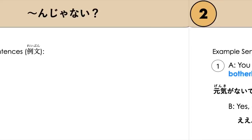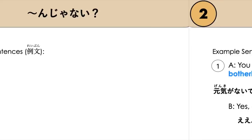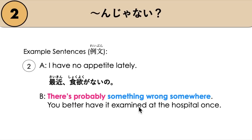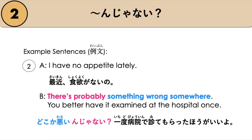Next example: A says, 'I have no appetite lately.' — さいきん、しょくよくがないの? And then B says, 'There's probably something wrong somewhere. You better have it examined at the hospital once.' Since we have an e-adjective, we don't need to change anything — we just add んじゃない because we're speaking casually: どこか悪いんじゃない? There's probably something wrong somewhere. いちど病院で見てもらった方がいいよ.